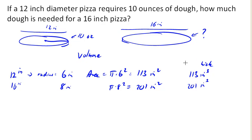Okay, so getting back to our proportion now, we could set up a proportion, saying we need 10 ounces of dough for 113 square inches of area across the top. So that's going to be equivalent to x ounces of dough for 201 square inches.